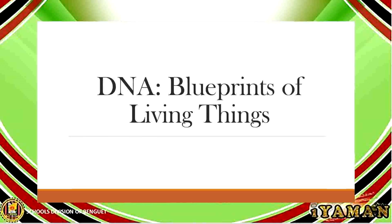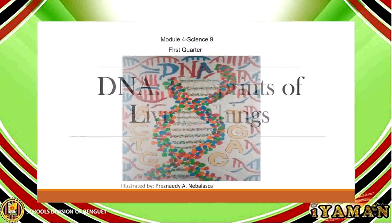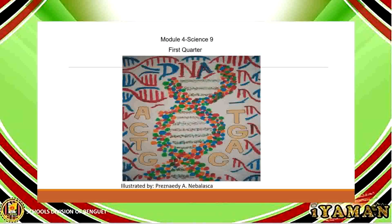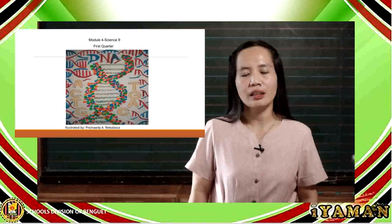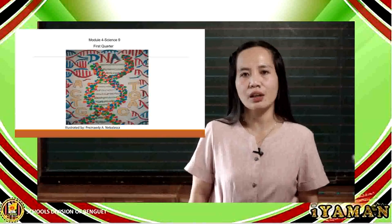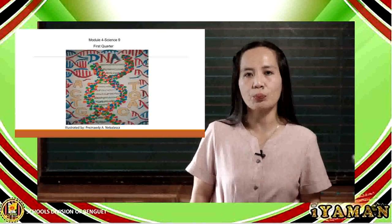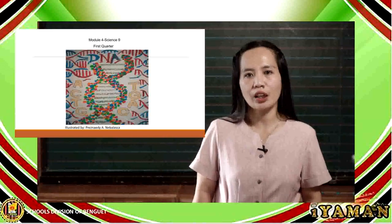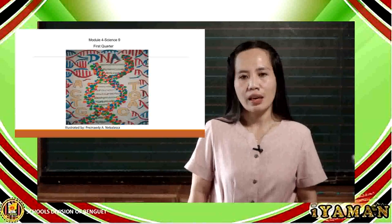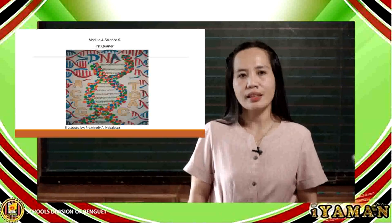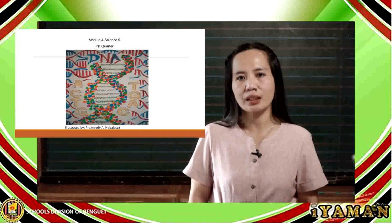As featured in the cover page, you can see here the double helix structure of the DNA. So, there are two strands, and it consists of three components. And you will soon find out what the letters T, A, C, and G represent.